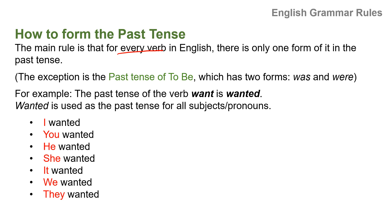The verb 'to be' is an exception — as you know, 'was' and 'were' are past tense: 'was' is singular and 'were' is plural. For example, the past tense of the verb 'want' is 'wanted,' and 'wanted' is used as the past tense for all subjects and pronouns.